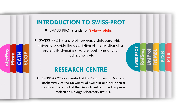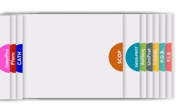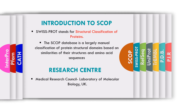The next database, which is part of PIR — Protein Information Resource — is SCOP, which stands for Structural Classification of Proteins. The SCOP database has a very large classification of proteins, specifically a manually curated classification of protein structural domains based on the similarity of their structures and amino acid sequences. Its research center is at the Medical Research Council Laboratory of Molecular Biology, United Kingdom.